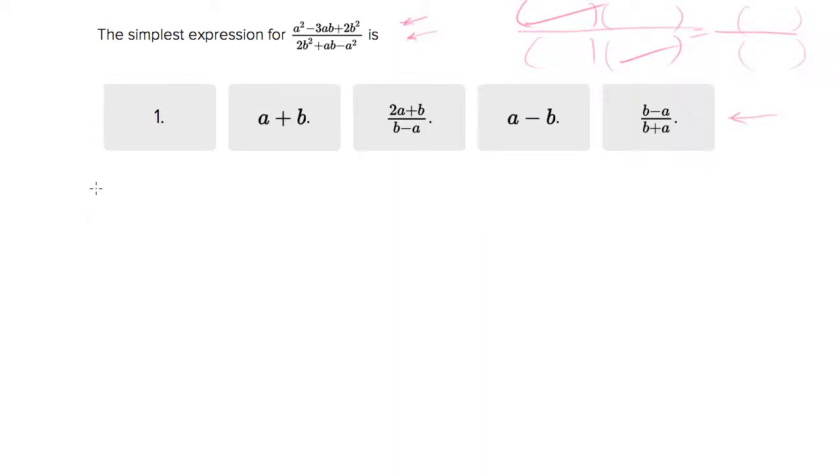So first let's factor the top. I'll just do these separately. So numerator is a squared minus 3ab plus 2b squared. And we're looking for, remember, two binomials. And we want an a term and a b term in both.